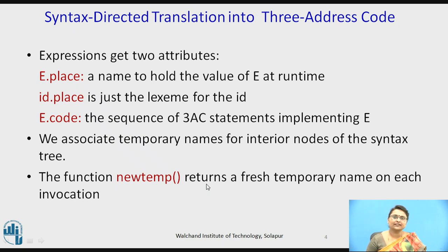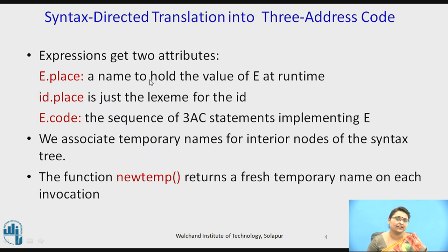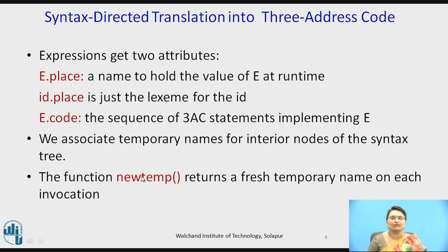For syntax-directed translation applied to three-address code, the non-terminal e has two attributes: place and code. The place attribute represents the value of e at runtime, and the code attribute represents the three-address code for that e. For non-terminal id, it has only a place value. A function called newtemp is used, which always returns a new temporary name for three-address code generation.